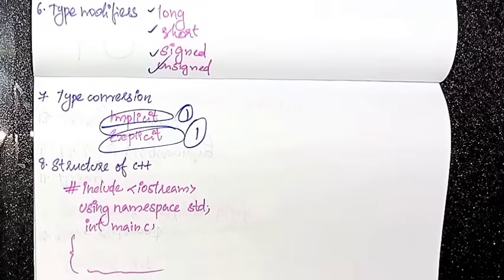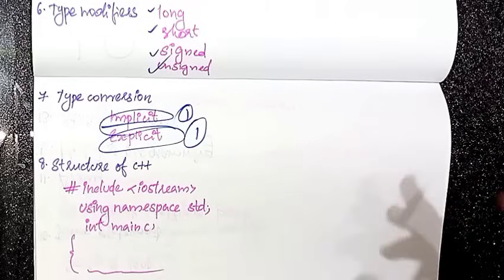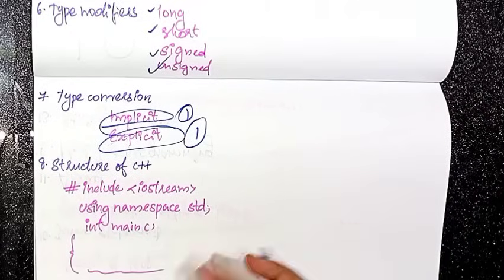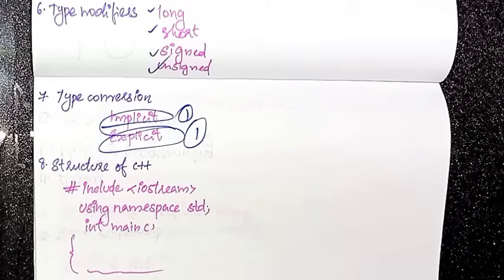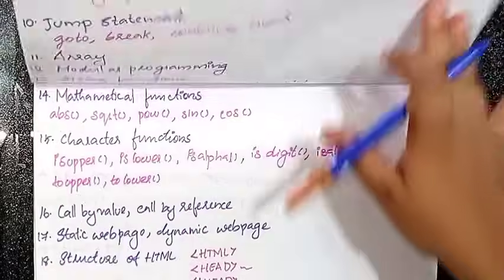The next topic is the structure of C++. We normally use: hash include, iostream, using namespace std, int main, and open curly brace. Then return 0 and close curly brace.